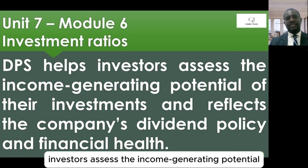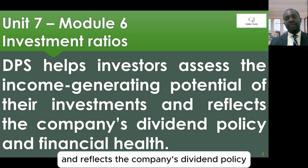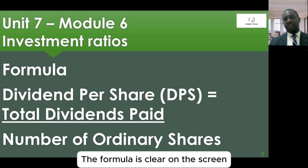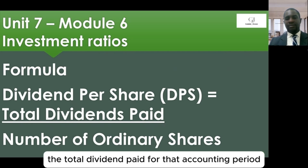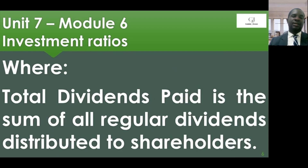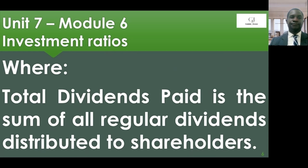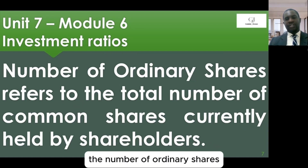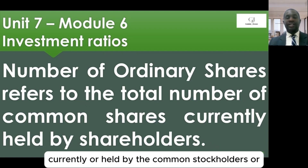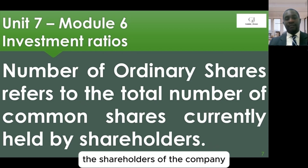DPS helps investors assess the income-generating potential of their investments and reflects the company's dividend policy and financial health. The formula is: total dividends paid for the accounting period divided by the number of ordinary shares. The dividend paid is the sum of all regular dividends distributed to shareholders, and the number of ordinary shares refers to the total common shares held by stockholders of the company.